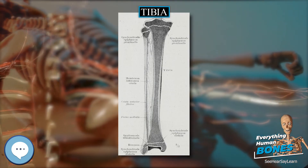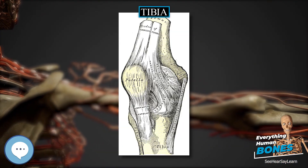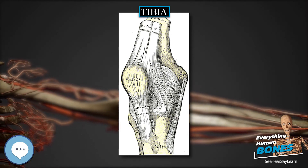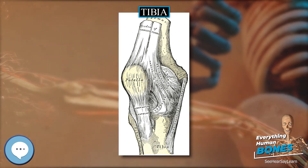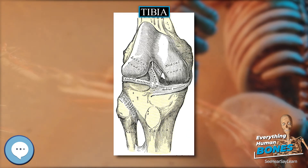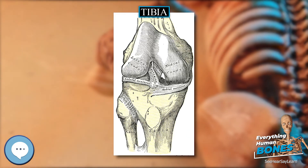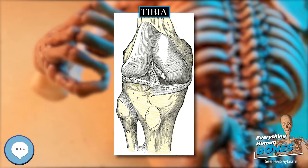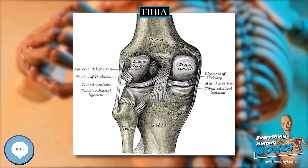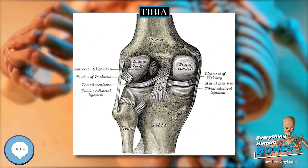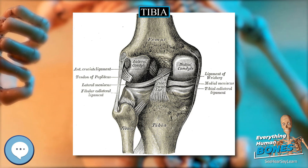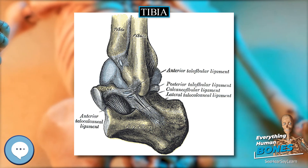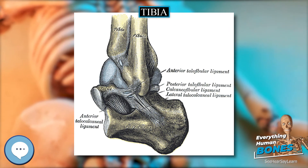The tibiofibular joints are the articulations between the tibia and fibula which allow very little movement. The proximal tibiofibular joint is a small plane joint. The joint is formed between the under surface of the lateral tibial condyle and the head of the fibula. The joint capsule is reinforced by anterior and posterior ligaments of the head of the fibula.